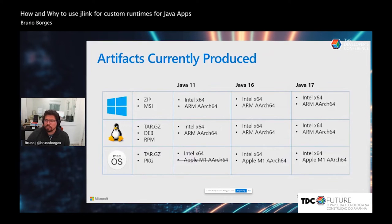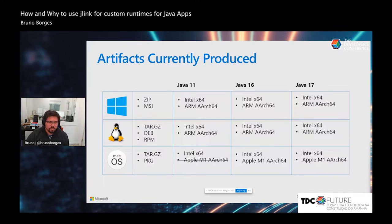Here's a table of what we ship — all architectures and package types: tar.gz, zip, MSI, and Linux packages. We are still not shipping Java 11 for macOS M1 Apple Silicon, but we may see that in the near future.